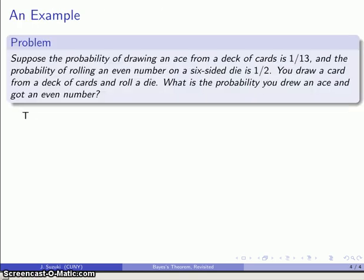All right, so let's take a look at another problem. So suppose the probability of drawing an ace is 1 thirteenth, and the probability of rolling an even number on a six-sided die is one-half. Again, we're not going to worry too much about where these probabilities come from, at least not yet, but assume that they are found, obtained, determined. Somehow we get these probabilities.